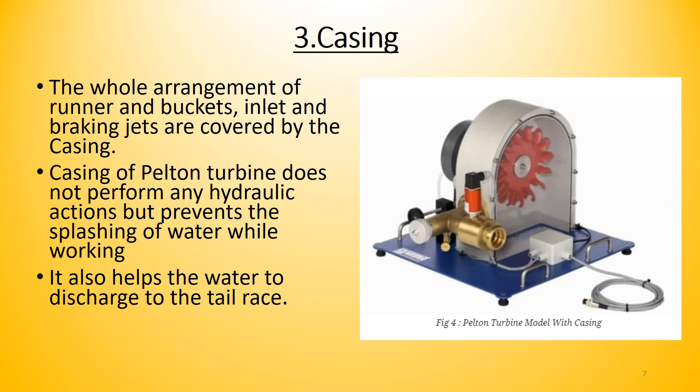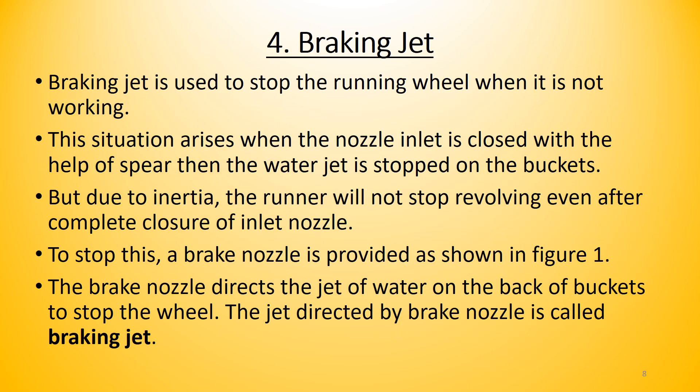The third main part is the casing. The whole arrangement of runner, buckets, inlet, and braking jet is covered by the casing. The casing itself has no hydraulic function, but it prevents splashing of water and helps direct discharged water to the tail race. The fourth important part is the braking jet or braking nozzle, used to stop the rotation of the wheel when not working. When the nozzle inlet is closed with the spear, the runner continues rotating due to inertia, so the brake nozzle directs a jet onto the back of the bucket to stop the wheel.